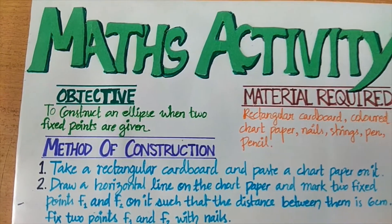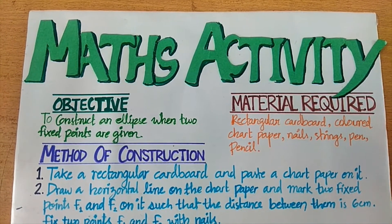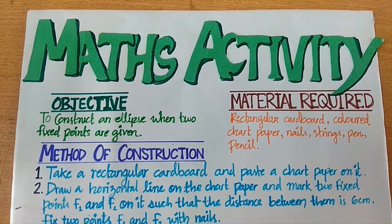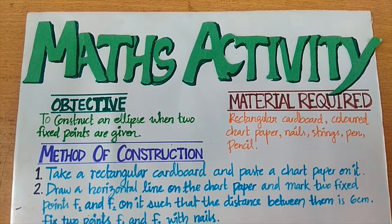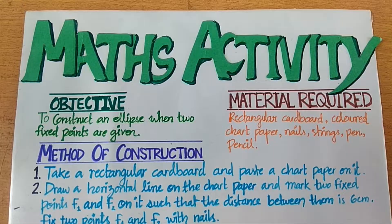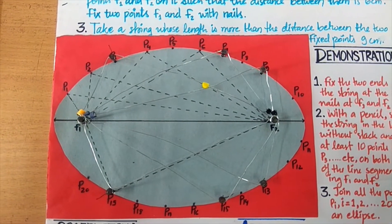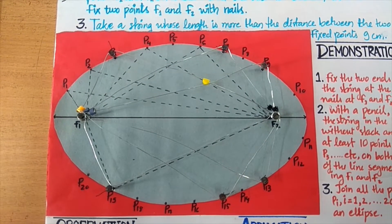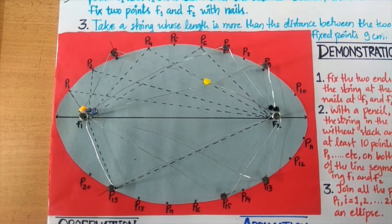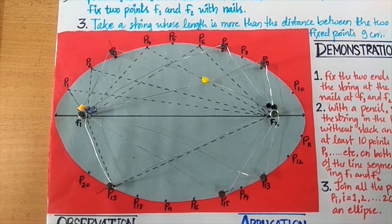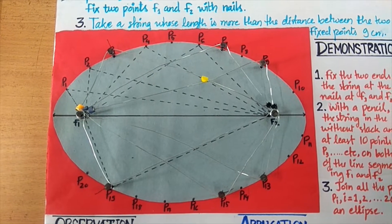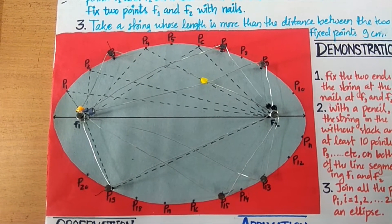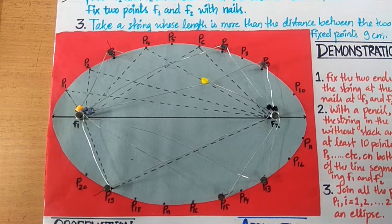The objective of my activity is to construct an ellipse when two fixed points are given. As we know that an ellipse is the set of all points in a plane, the sum of whose distances from two fixed points in the plane is a constant.